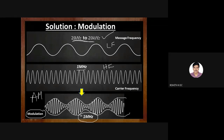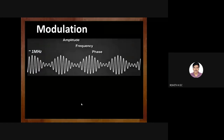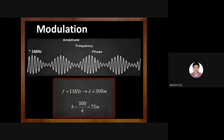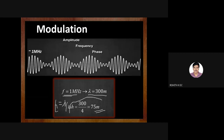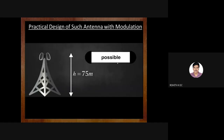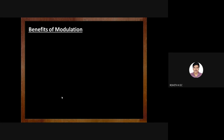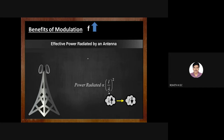The modulated signal frequency is around 1 MHz. Now what is the effect on λ? At 1 MHz, λ computes to 300 meters, and h = λ/4 = 75 meters. To design an antenna of height 75 meters is practically feasible and possible. This is the very reason why we go for modulation — to transmit signals for long-distance communication using an antenna by increasing the frequency.